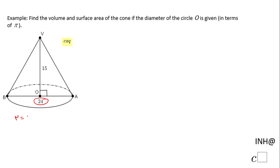The first thing I'm going to do is find the radius. The radius is half of the diameter, so that will be 24 divided by 2, which is 12. Also, you'll notice the height of this cone is 15.